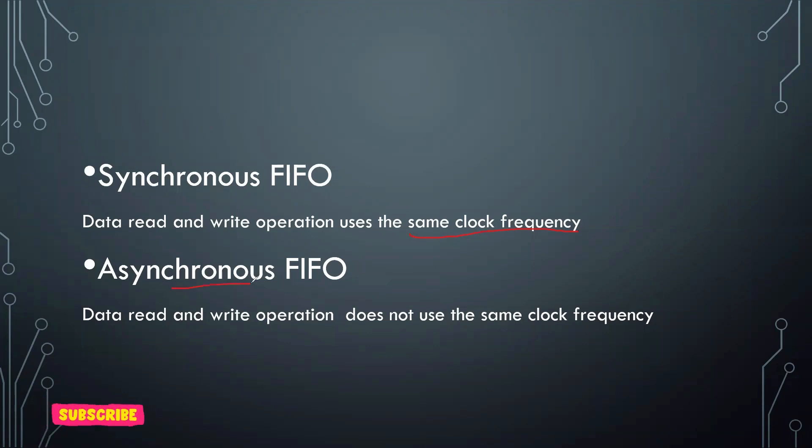Whereas in asynchronous FIFO, the read and write operation does not use the same clock. They have different clock frequencies. The read operation uses a different clock and the write operation uses a different clock. This is the main difference between synchronous and asynchronous FIFO.